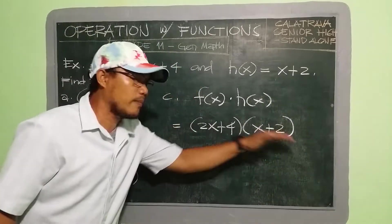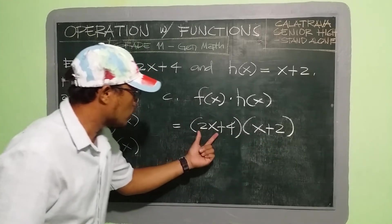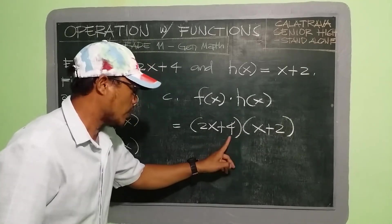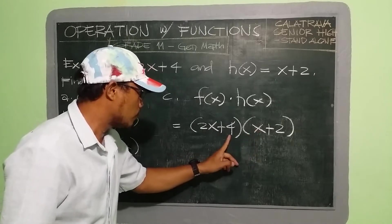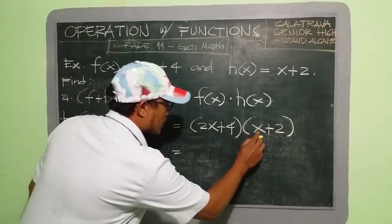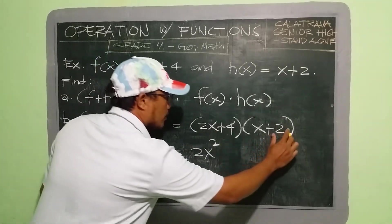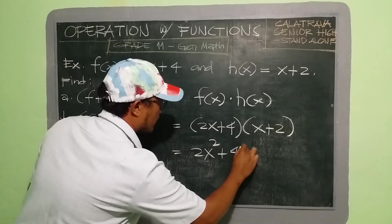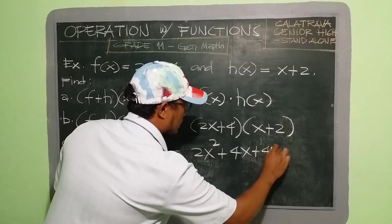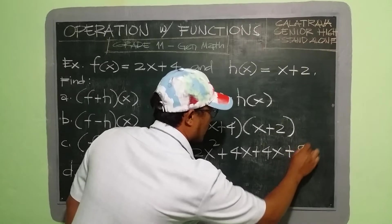We multiply using the distributive property of multiplication. 2x is multiplied to x, then 2x multiplied to 2, then 4 multiplied to x, and 4 multiplied to 2. So: 2x times x = 2x², 2x times 2 = 4x, 4 times x = 4x, and 4 times 2 = 8.